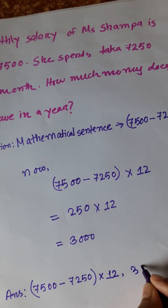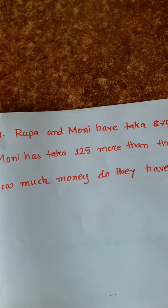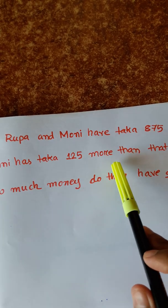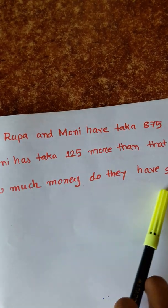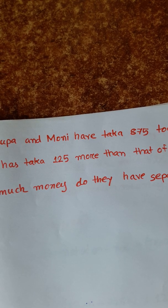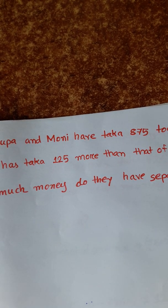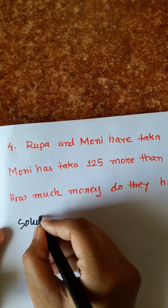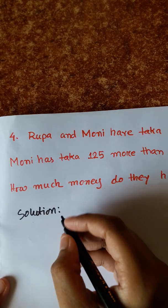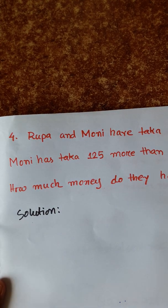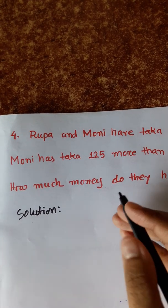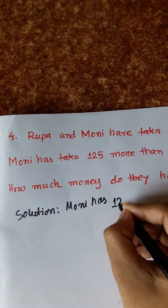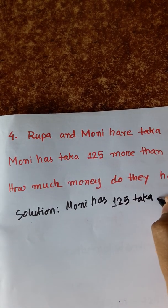Next: Rupa and Moni have Taka 875 together. Moni has Taka 125 more than Rupa. How much do they have separately? Moni has 125 Taka more.